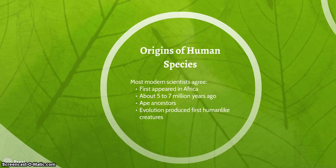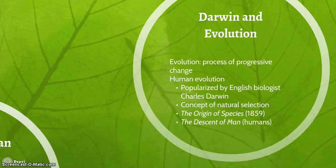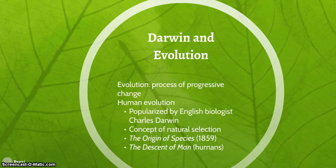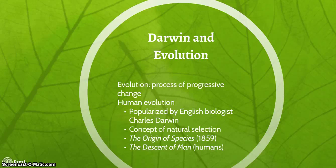Most modern scientists agree that humans originally appeared in Africa about 5 to 7 million years ago. We came from ape ancestors, and our evolution produced the first human-like creatures, otherwise known as hominids. Darwin was the scientist who developed the theory of evolution, which was a theory of a process of progressive change. Human evolution was popularized by the English biologist Charles Darwin, also the concept of natural selection. He wrote The Origin of the Species in 1859 and The Descent of Man, in which he talks about the evolution of human beings.